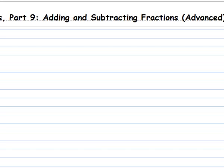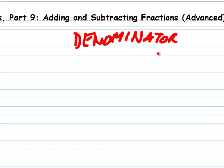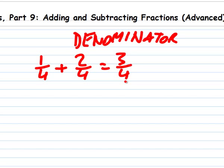It's called Adding and Subtracting Fractions Advanced. Way back in part 4, you learned that adding fractions is easy as long as their denominator is the same. So 1/4 + 2/4 = 3/4. But what if they have different denominators?